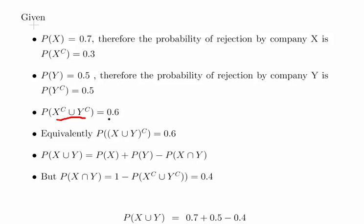That is how we would write that there, at least one of their applications: complement of X union the complement of Y, and we're told that the probability of that is 0.6. Now using those identities that we worked on earlier.